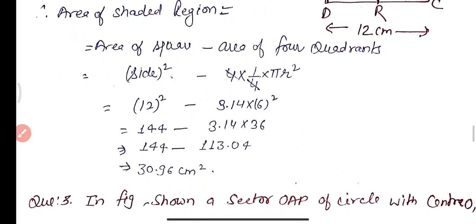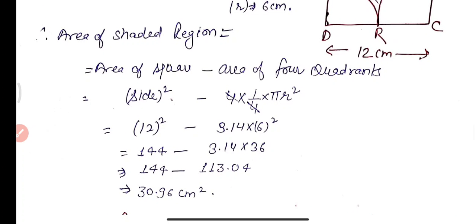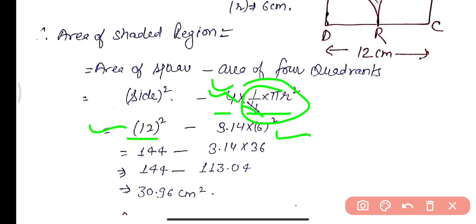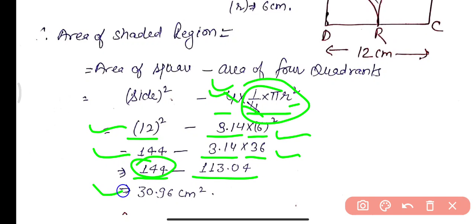Area of shaded region = Area of square − Area of four quadrants. Area of four quadrants = 4 × (1/4) × πr² = πr² = 3.14 × 36 = 113.04 cm². Area of square = 12² = 144 cm². Area of shaded region = 144 − 113.04 = 30.96 cm².